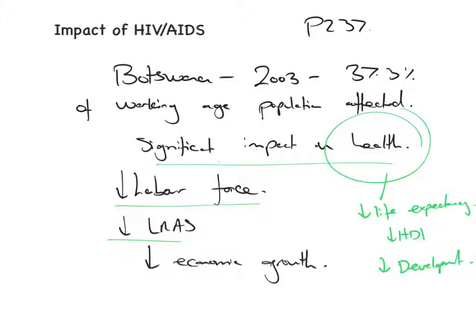For evaluation of the HIV/AIDS point, this disease has a really significant impact on working-age people, giving it potential to severely reduce the labour force. It's also not something that can easily be addressed by foreign aid. However, on the other hand, HIV/AIDS does not affect all developing countries equally, so while it is very serious, it's not a problem every country faces — meaning you need to be careful about calling it the single most significant constraint.